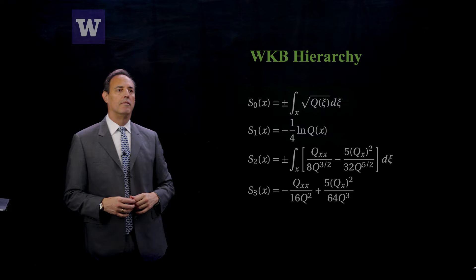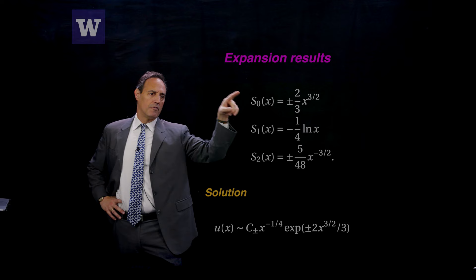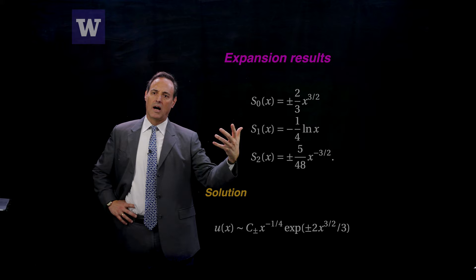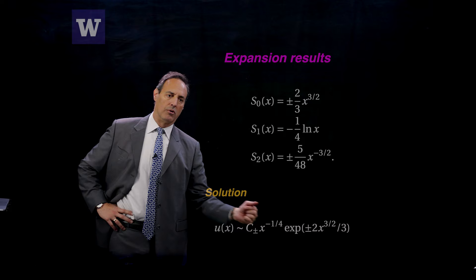So here's what we have. I'm going to plug it in. And then when you actually go compute this with q of x being x, this is what you get. The first-order solution is x to the three-halves, and you get s1, which is a log x, and s2, which is x to the negative three-halves. And then you can keep going if you'd like. This is such a simple q of x that you can actually compute these out very nicely. And then your solution behavior is given by the following. Your two solutions are x to the negative fourth and this exponent here.